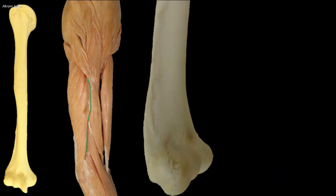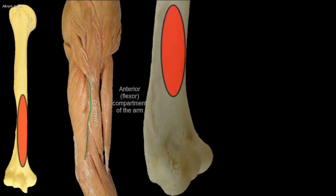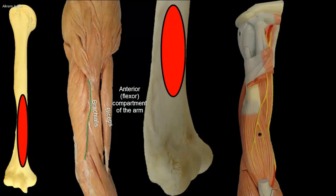The anterior or flexor surface of the lower part of the humerus provides attachment for brachialis. Brachialis is covered with biceps, but in this plastic model, biceps is removed from the front of brachialis so we can see the full extent of brachialis. Note that the musculocutaneous nerve is sandwiched between biceps and brachialis, and thus it is not in direct contact with the humerus.